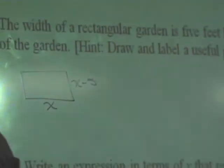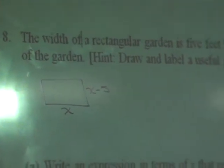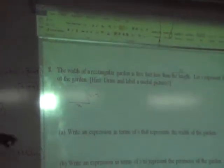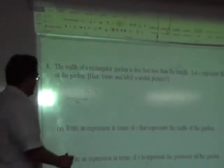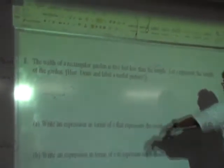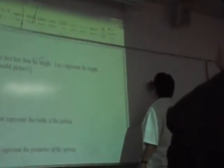If you write 5 minus X, you're going to get the wrong answer. 5 less than X means X minus 5. That would be the answer for part A. If someone would be scrolling, I should have done that picture on the side here. For A, you're going to say width equals X minus 5.